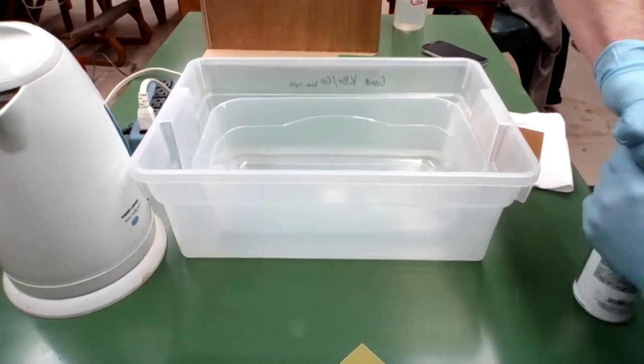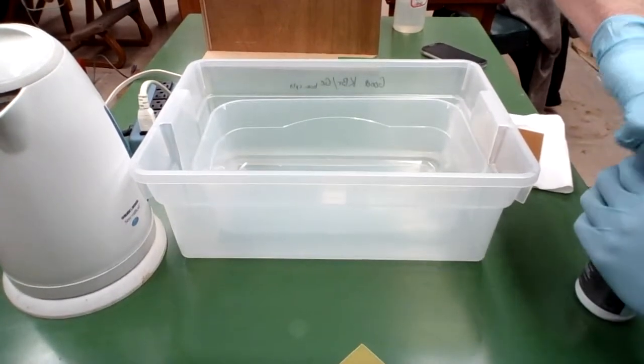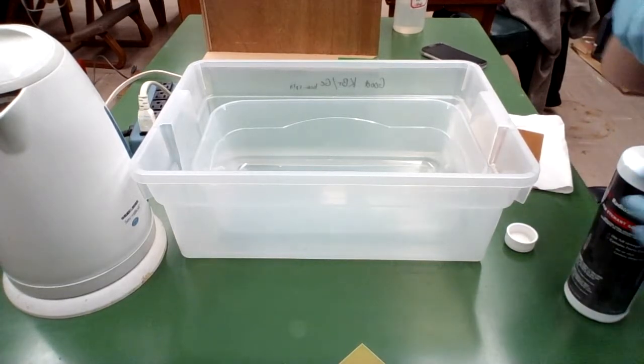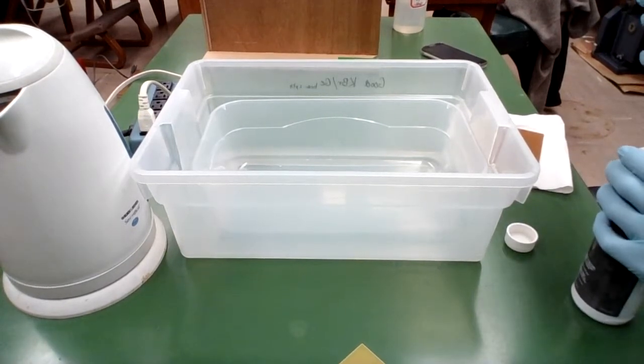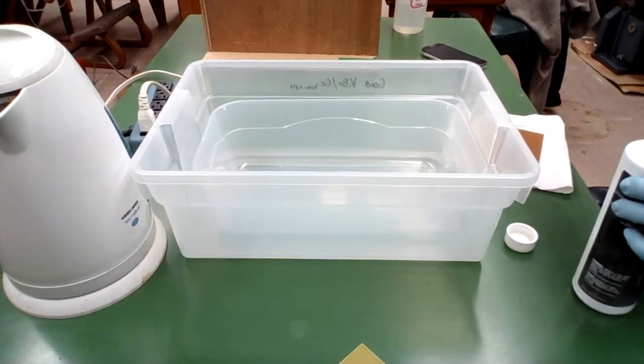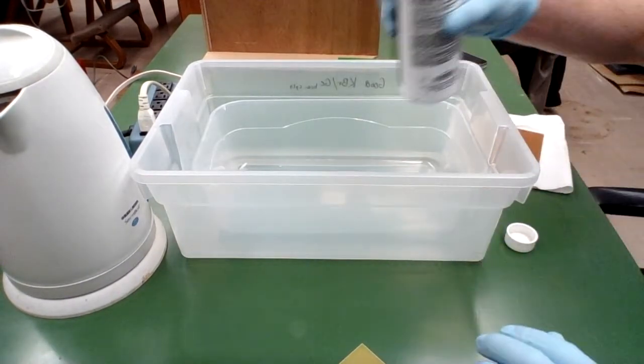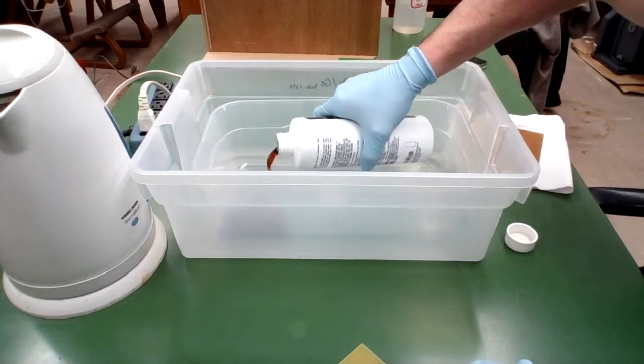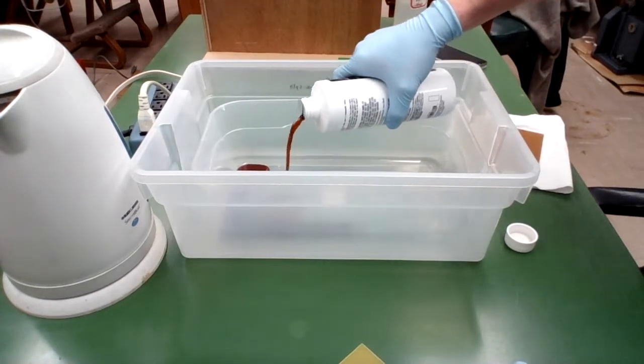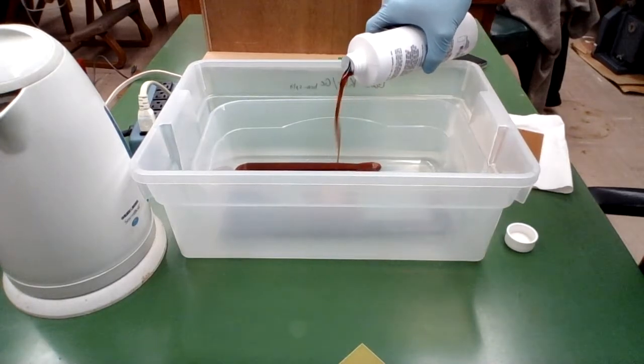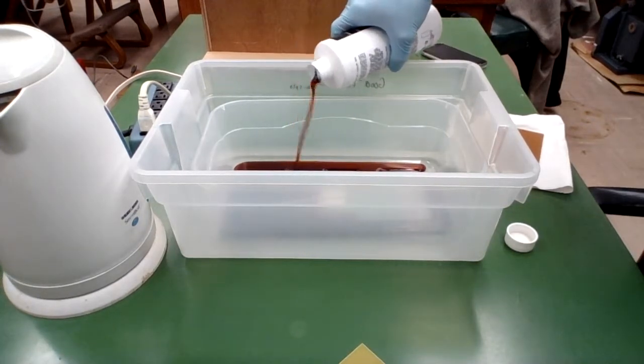All right, so let's do this. So I'm going to pour my etchant here at a depth of one quarter inch. It's better if you use a smaller tub because you have to use less etchant.